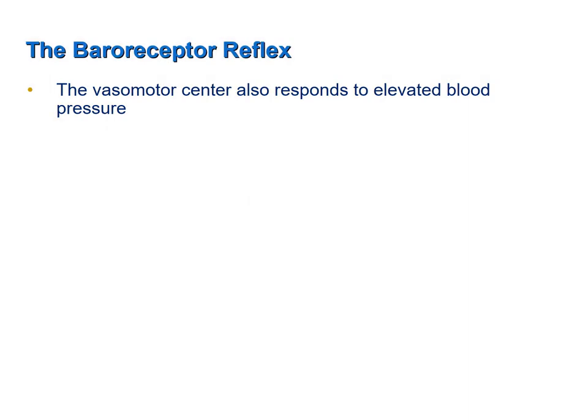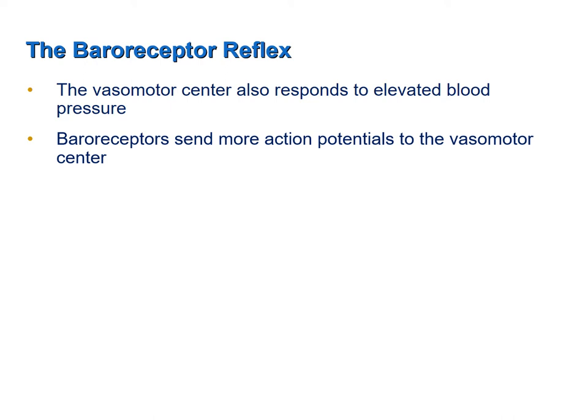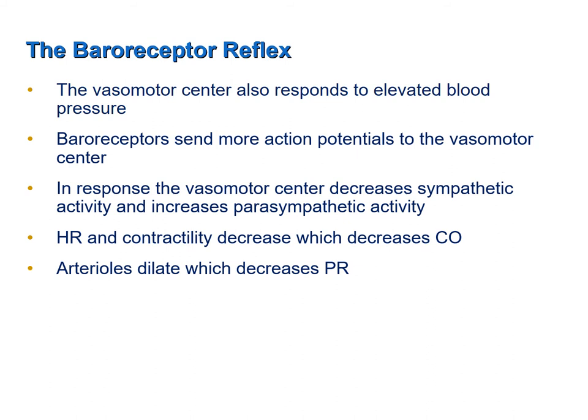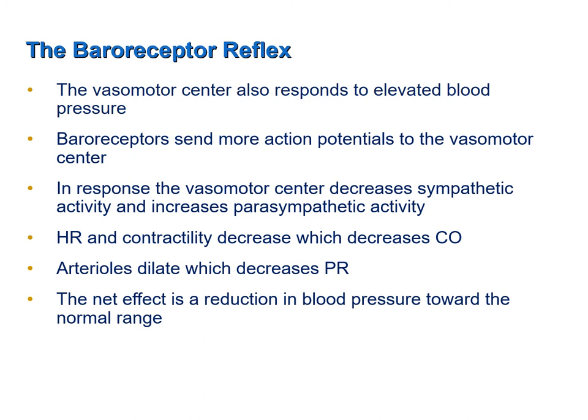The vasomotor center of the baroreceptor reflex also responds to elevated blood pressure. Baroreceptors send more action potentials to the vasomotor center, which in response decreases sympathetic activity and increases parasympathetic activity. Heart rate and contractility of the ventricles decrease, which decreases cardiac output. Concurrently, arterioles dilate, which decreases peripheral resistance. The net effect is a reduction in blood pressure toward the normal range.